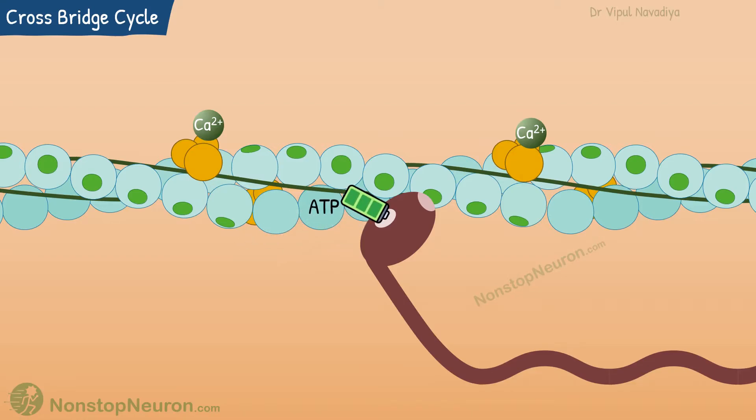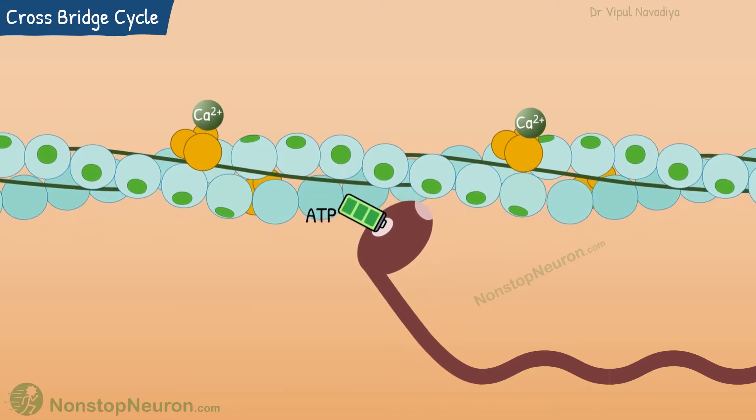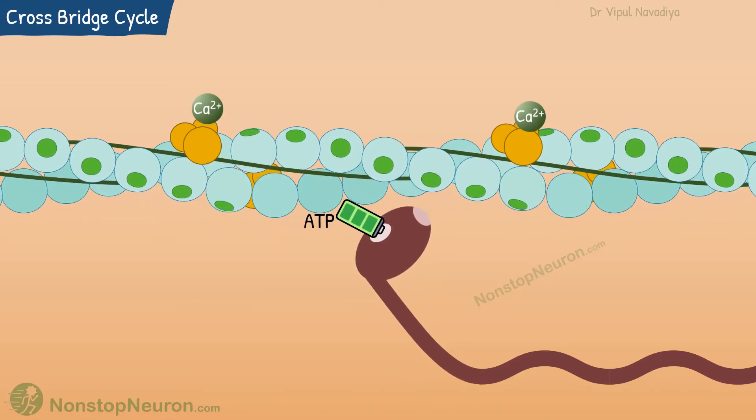ADP is released right after the power stroke. A new ATP molecule binds with the head. This binding reduces the affinity of myosin for actin, so it detaches from the actin.